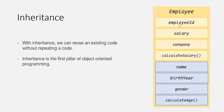The employee object, when it inherits from the person object, has its own employee ID, salary, company, and calculate salary method, and inherits name, birth year, gender, and calculate age from the person object. This is called inheritance. With inheritance, we can reuse existing code without repeating it. Inheritance is the first pillar of object-oriented programming.